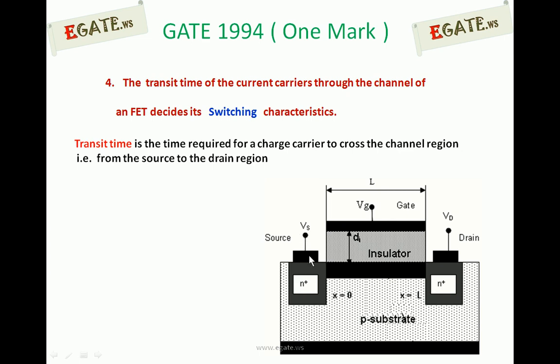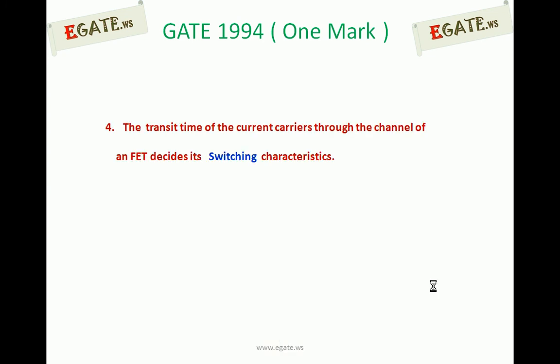How much time does it take for the electrons to move from the source end at x equals 0 to reach the drain end at x equals L is the transit time. How fast the electrons move from source to drain indicates how fast the device is going to turn on as well as turn off. The switching characteristics — that is, on/off conditions — are based on the movement of charge carriers. If they move quickly, it turns on quickly. So transit time directly decides the switching characteristics, and the right answer is switching characteristics.